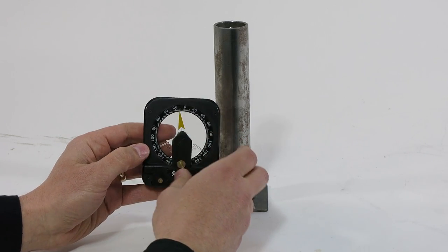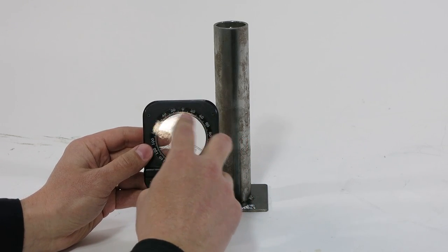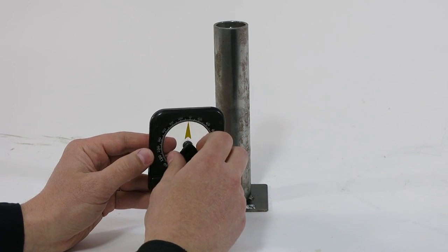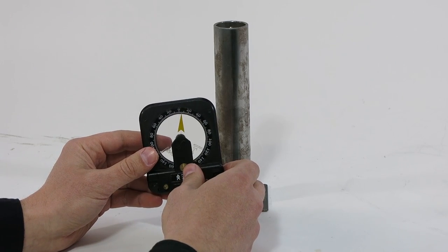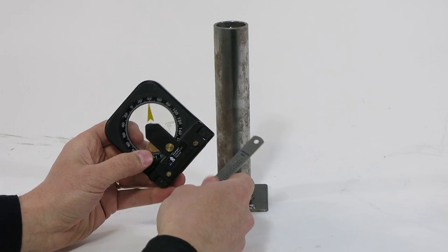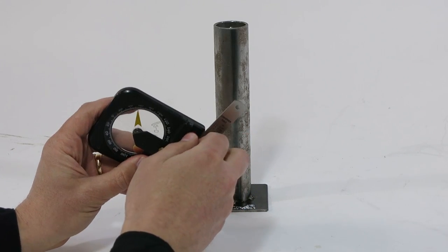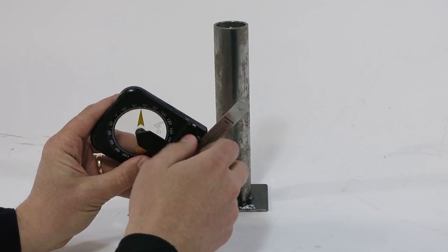This tool does have larger graduations on the back side for easier reading. It also has a little pocket clip here. One of the nice features is it actually has a slot where you can insert a steel rule and little thumb screws.